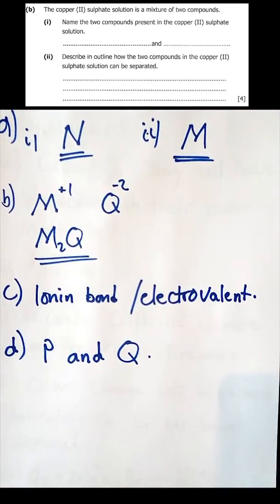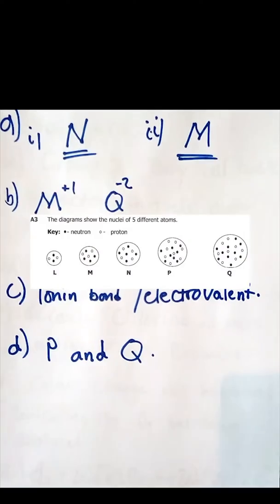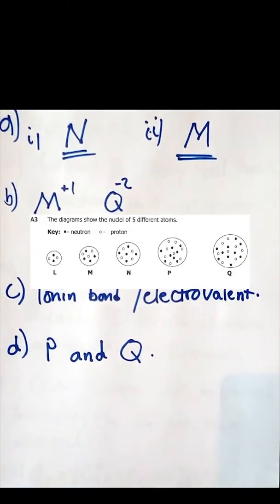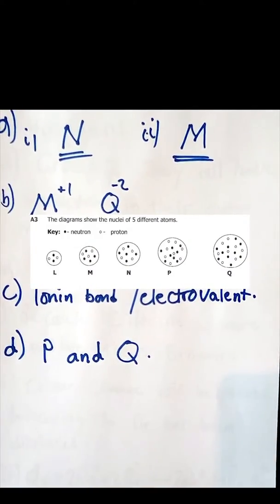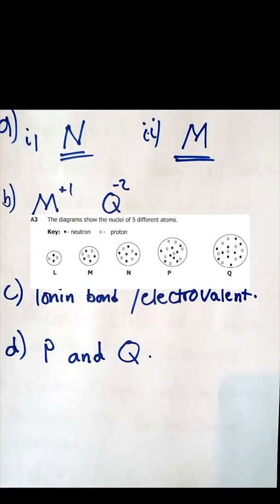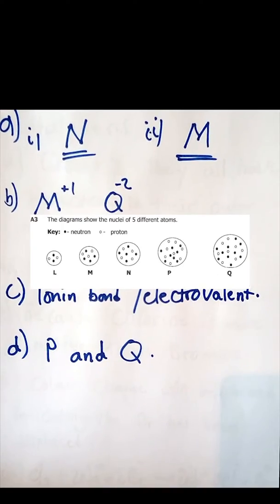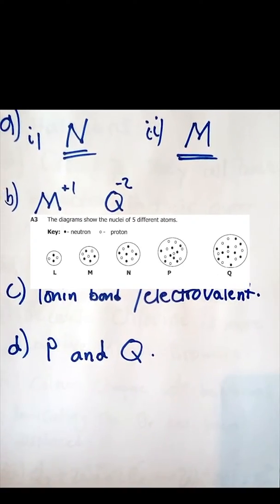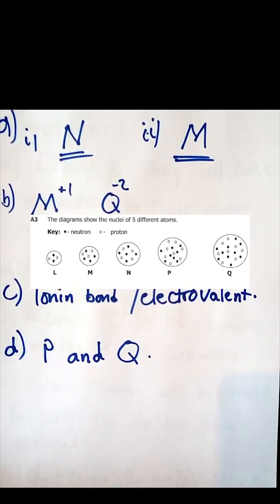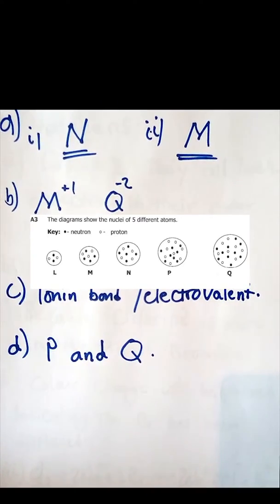We move on to the third question. The third question is about the first things in chemistry - atomic structure. You've got those diagrams L, M, N, P, and Q which contain neutrons and protons, that's the nucleus of atoms.